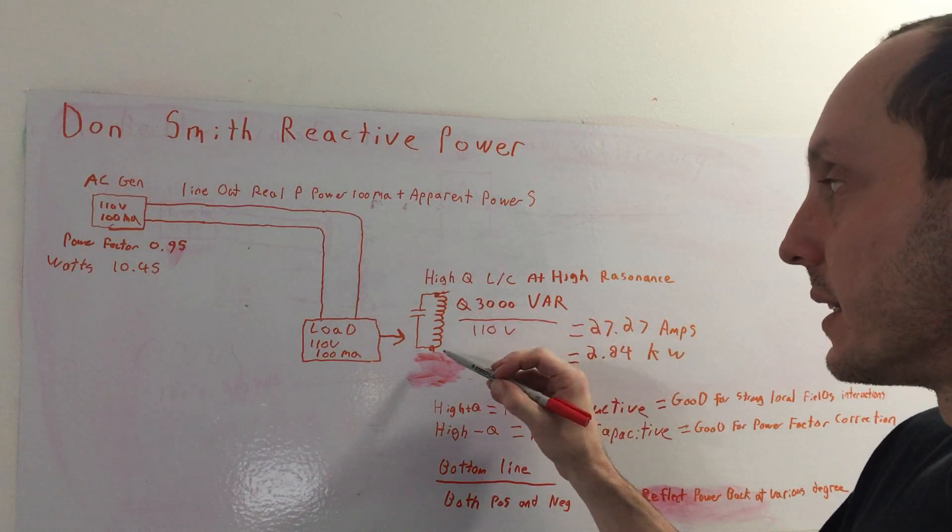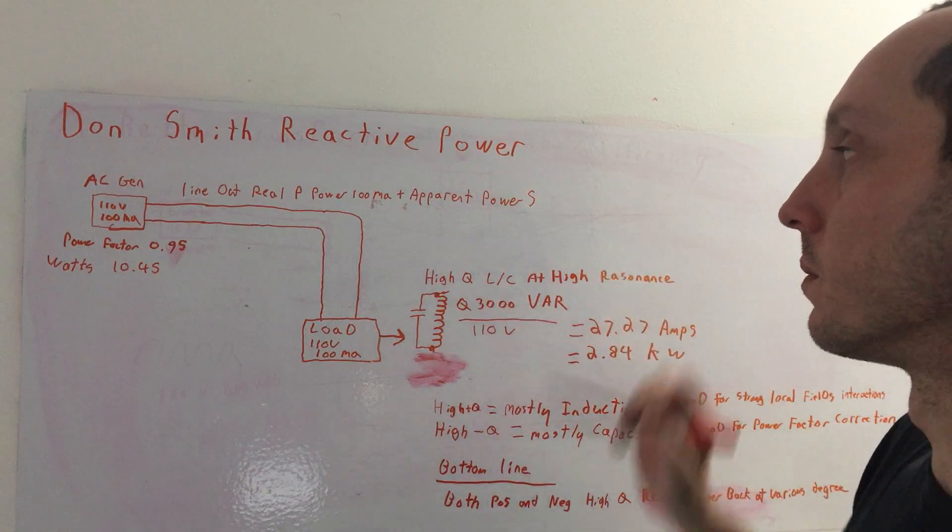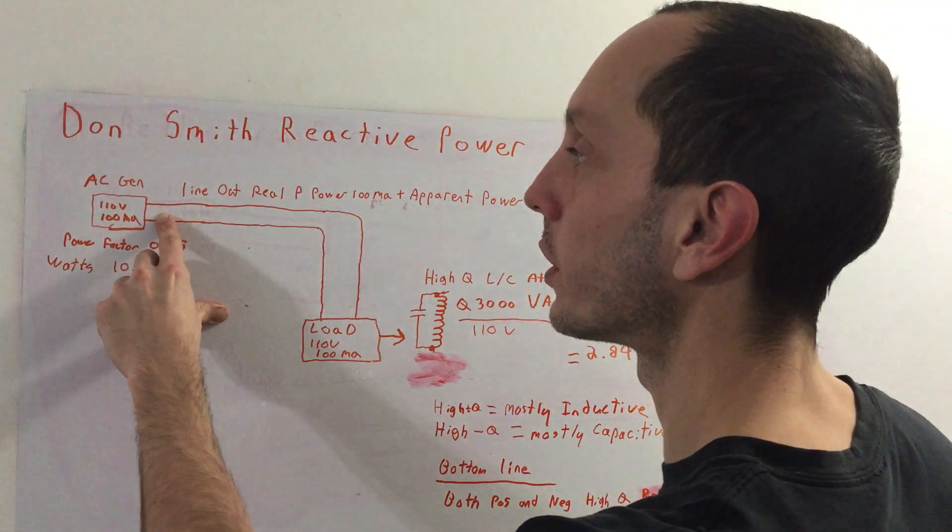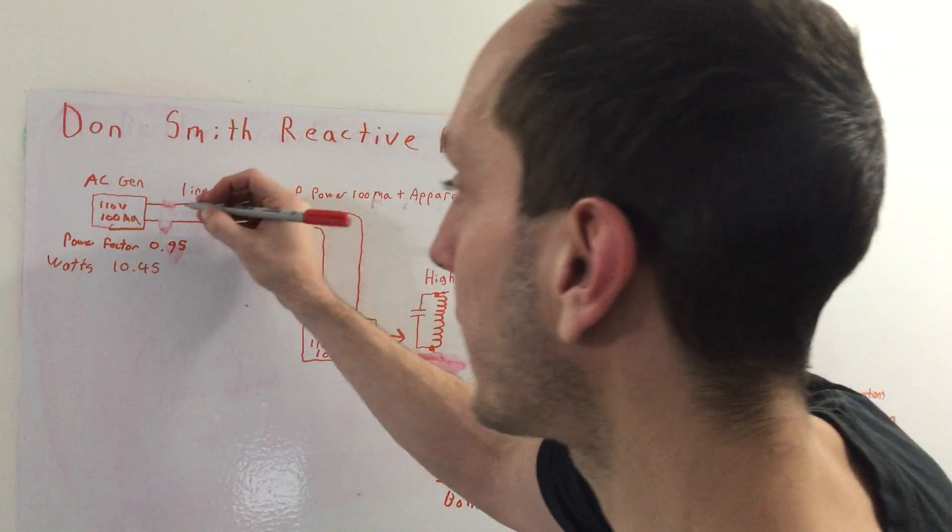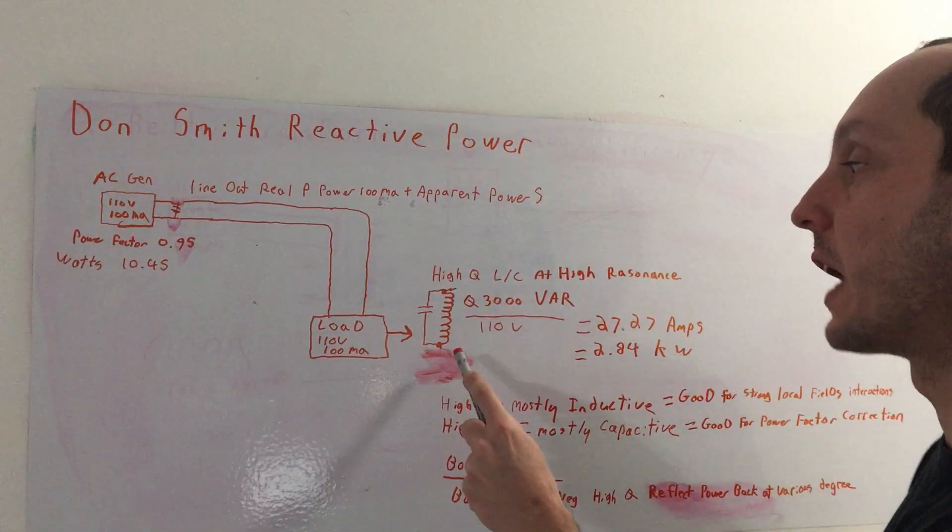So essentially here, what will happen is the line is going to have that apparent power. Now what you can do here is if one were to put, let's say, a capacitor here.